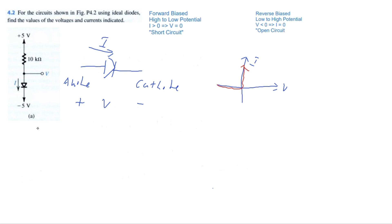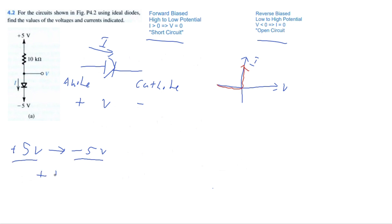Whenever you do a problem like this, you first want to determine whether you're in the forward biased region or the reverse biased region. Here we see this diode goes from plus five volts on the anode to negative five volts on the cathode. This is high to low potential — the difference is plus 10 volts — so we're in the forward bias region for this problem.